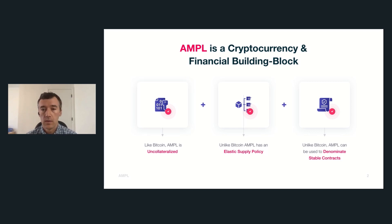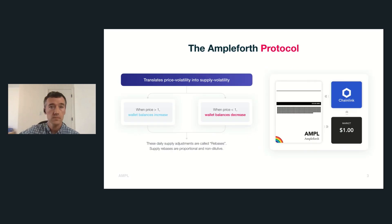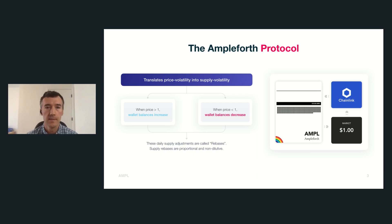The elastic supply adjusts according to the needs of the marketplace, which provides a long-term unit of account. That unit of account unlocks more utility for Ample — we describe it as the ability to denominate stable contracts. The Ampleforth protocol is fairly simple; it has a supply policy that exists purely on-chain, determined by rules.